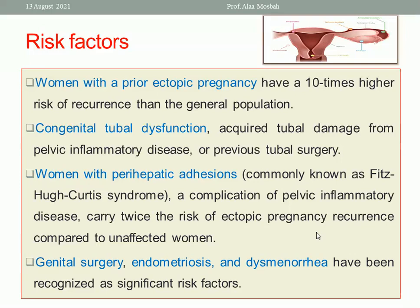One of the most important risk factors is a prior ectopic pregnancy, which carries a ten times higher risk of recurrence than the general population. Tubal abnormalities, whether congenital or acquired — such as in pelvic inflammatory disease or previous tubal surgery — are also major risk factors.